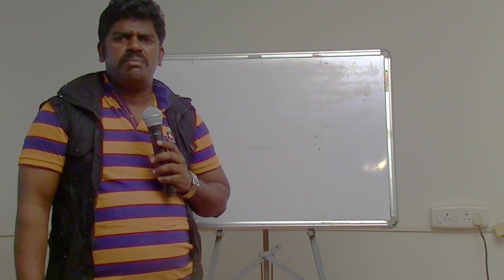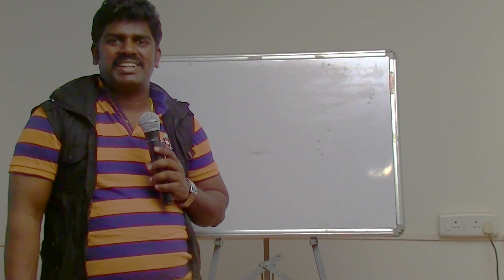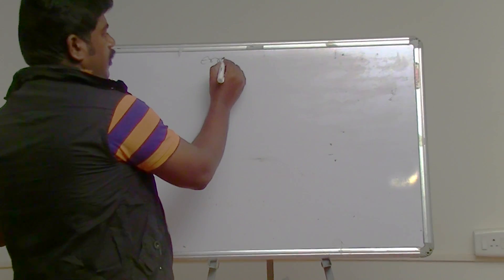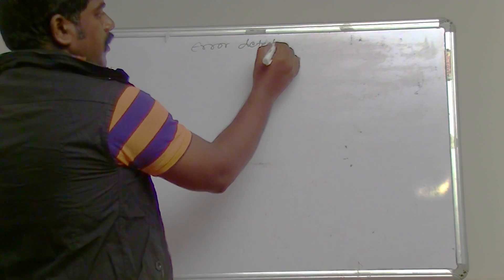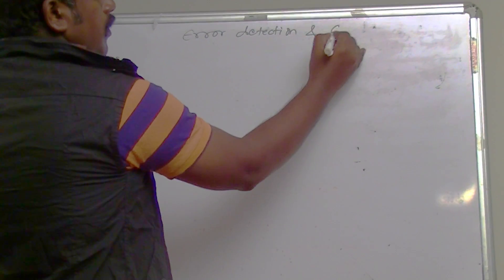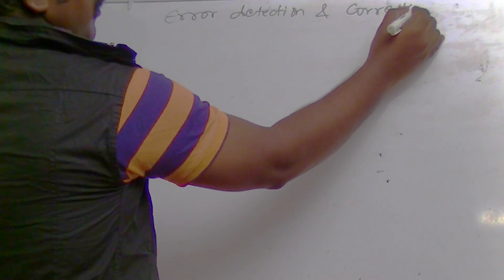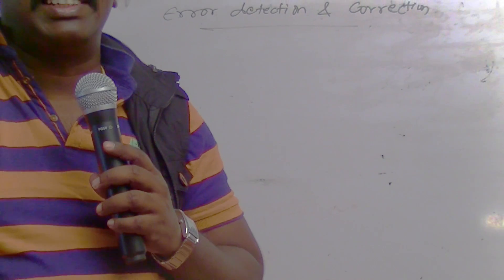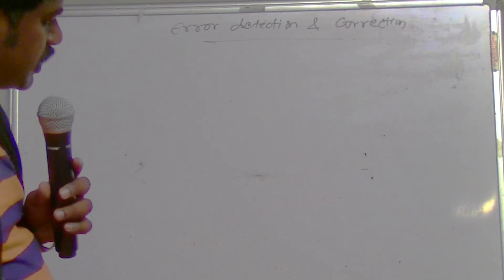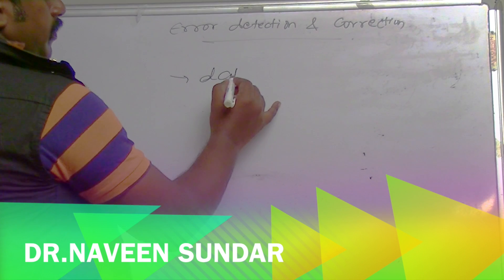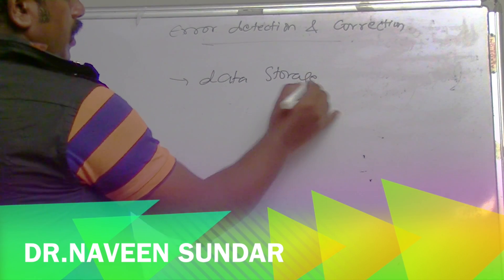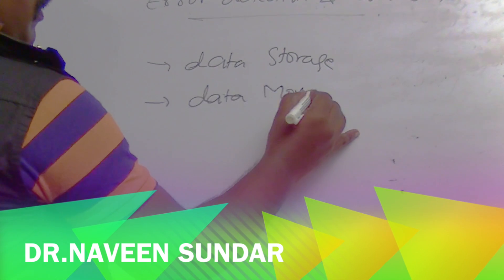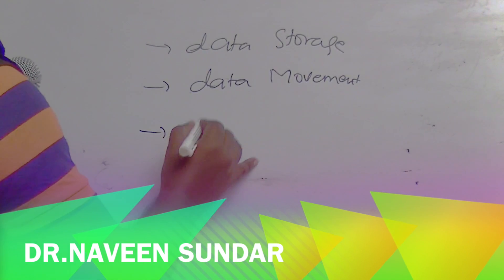Today we are going to see a very important topic in computer architecture: error detection and correction. Normally in a computer system there are different functions. The main functions are data storage, data movement, and data processing.